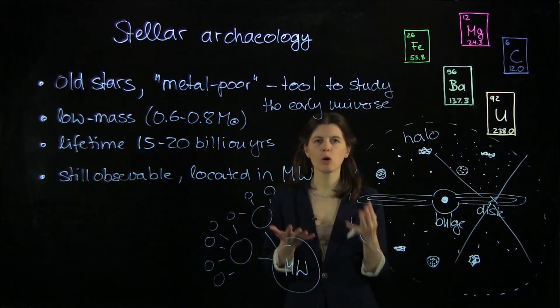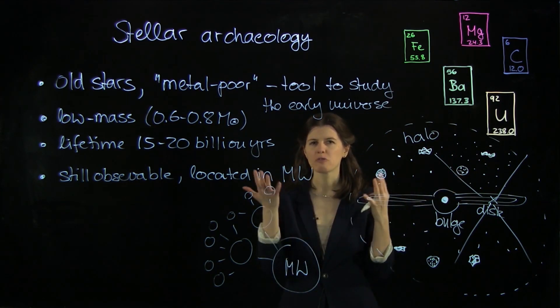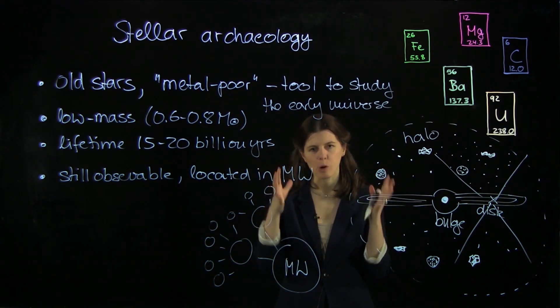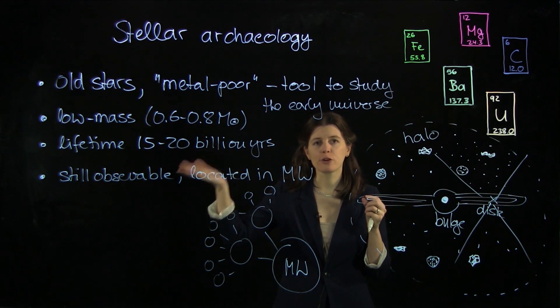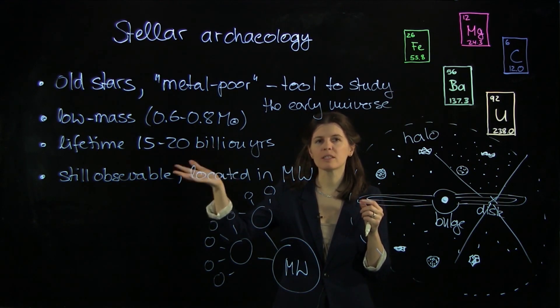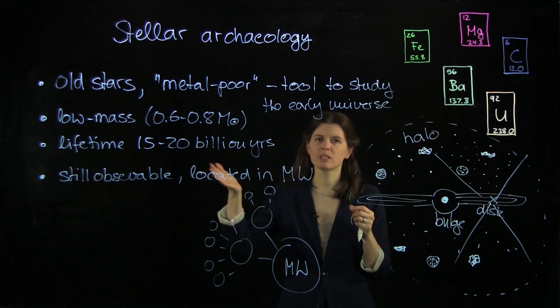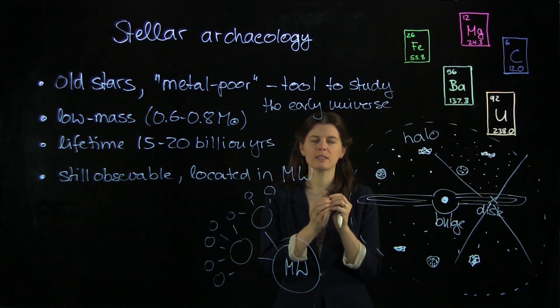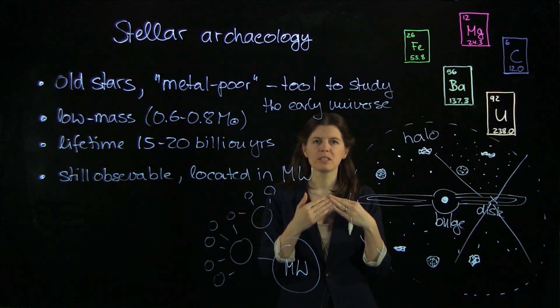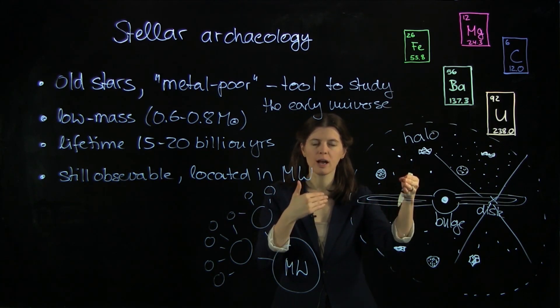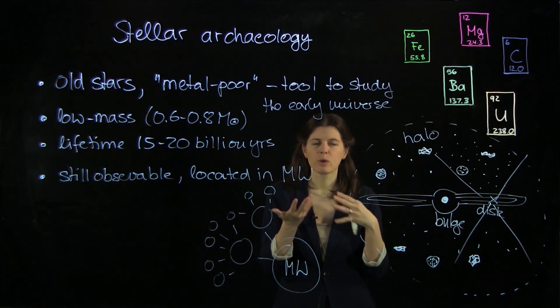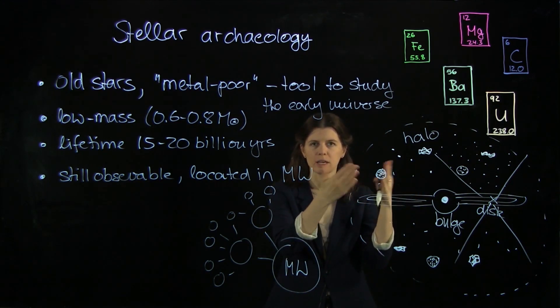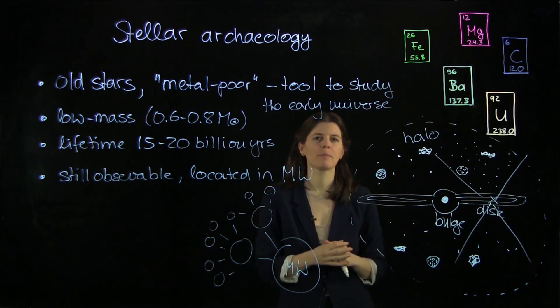So all in all, our metal poor stars are the local equivalent to what we call the high redshift universe. In a very complementary way, both metal poor stars and the furthest, most distant galaxies are used to study the early universe. These far away galaxies, when their light comes to us, we receive it from this early time. And this way we can figure out what this galaxy can tell us about the early universe, because it formed at that early time.